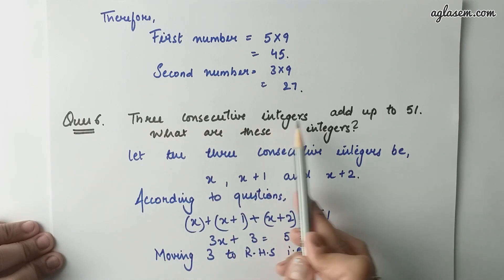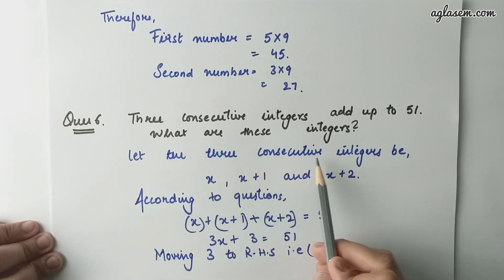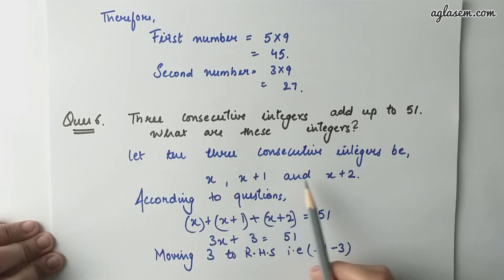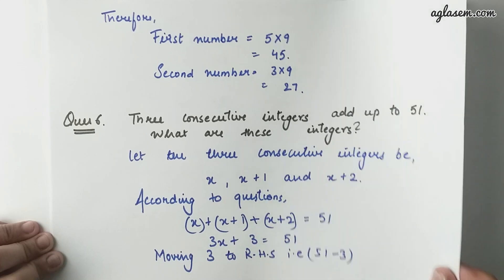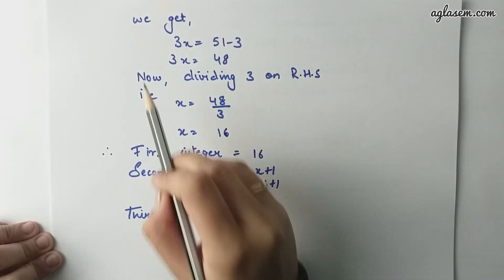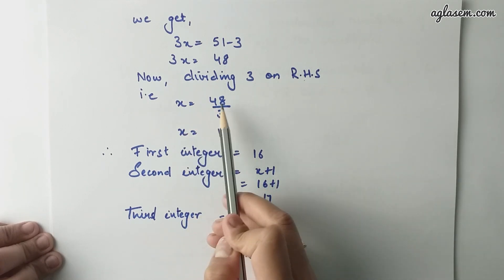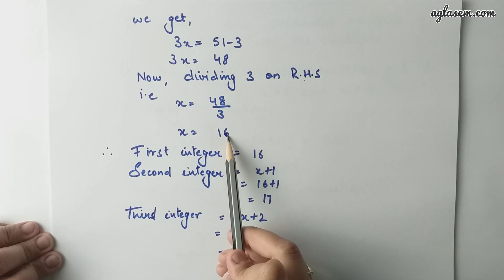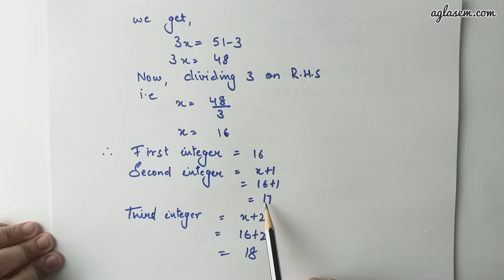Question number 6: Three consecutive integers add up to 51. What are these integers? Let the three consecutive integers be x, x plus 1, and x plus 2. According to the question, x plus x plus 1 plus x plus 2 equals to 51, giving 3x plus 3 equals to 51. Moving 3 to RHS, we get 3x equals to 48, so x equals to 16. Therefore, the first integer is 16, the second is 17, and the third is 18.